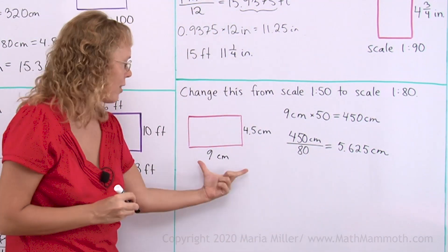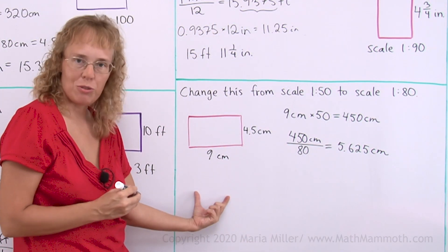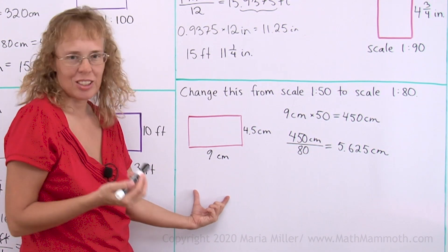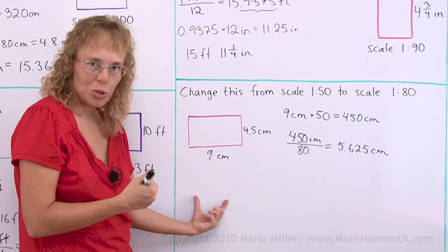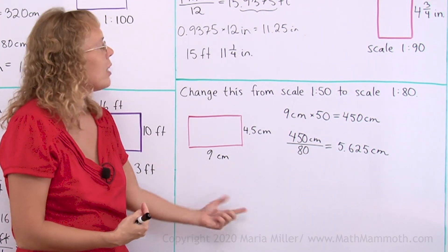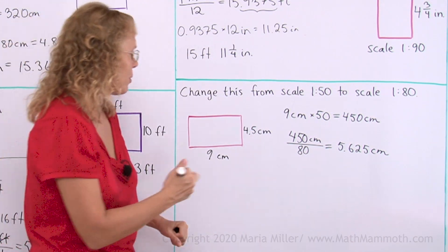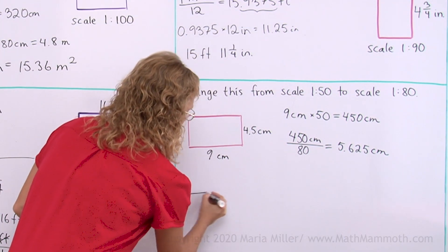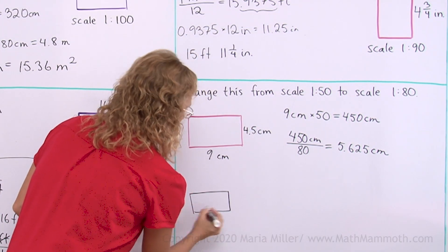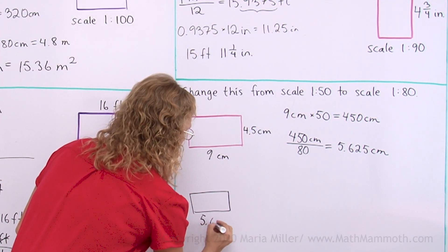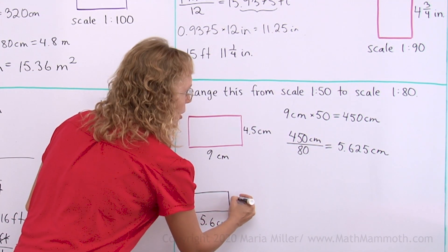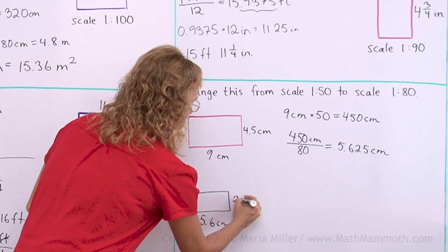So this dimension will be just 5.625 cm, 5.6 approximately, in the new floor plan. It will be smaller. And you do the same with this one. However, it happens to be just half of this. So, let me draw this rectangle here. This will be about 5.6 cm. And this will be about 2.8 cm, just being half of that.